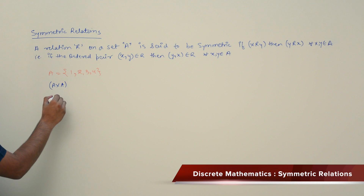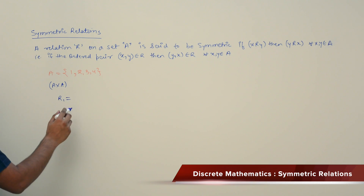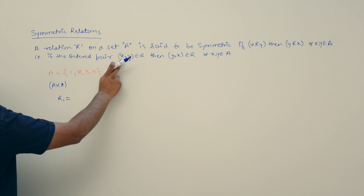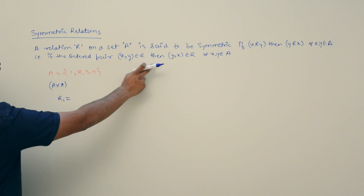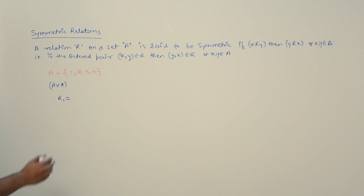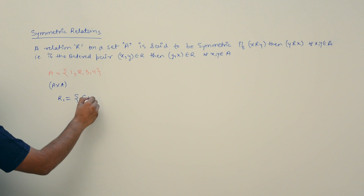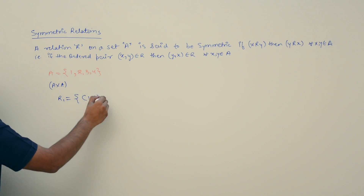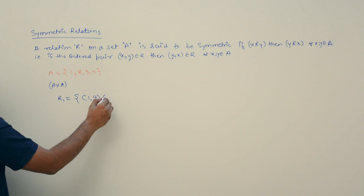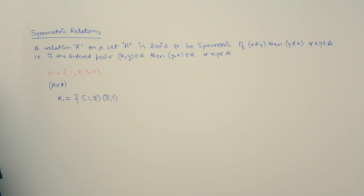If a relation has to be symmetric, then that relation should contain the ordered pair: if it is containing (x, y), then (y, x) should also be there. That means if that relation is containing (1, 2), then for the relation to be symmetric, (2, 1) should also be there.